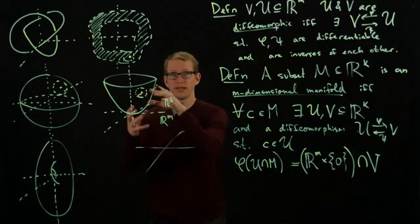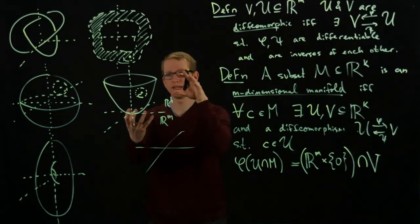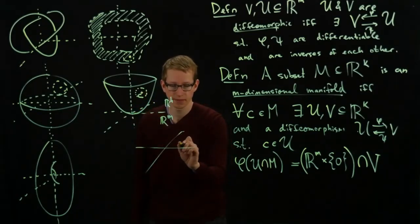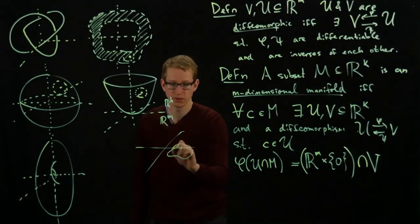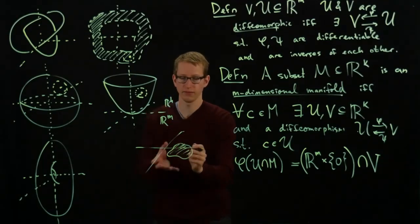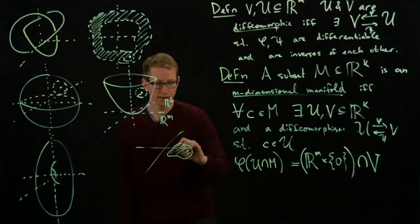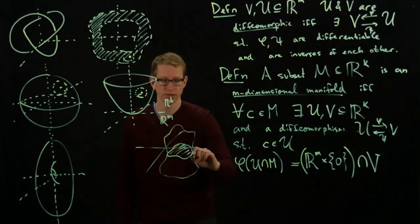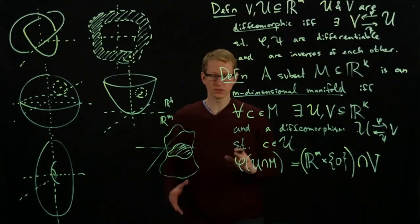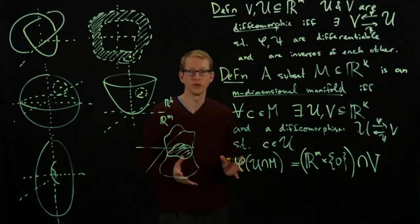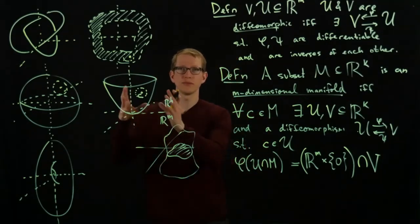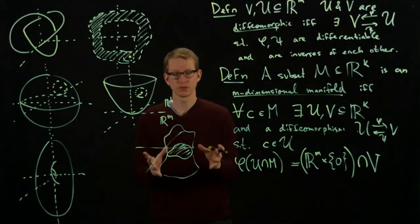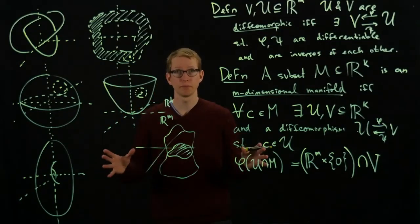That open set intersected with the surface is going to trace out some two-dimensional object here. And then maybe the open set might look sort of extended out in this direction, something like that. And so that's the definition of a manifold, using our intuition how something locally looks like a smaller dimensional flat plane around every single point.